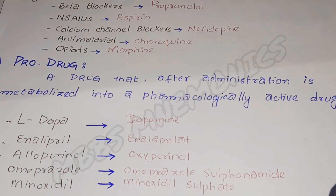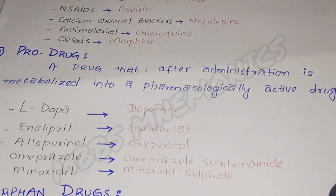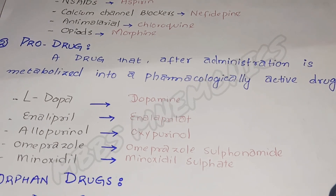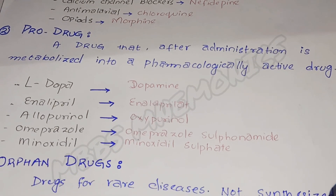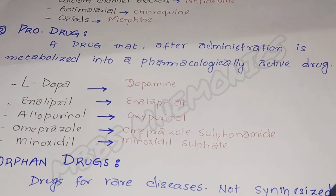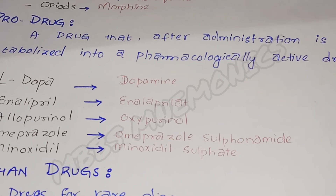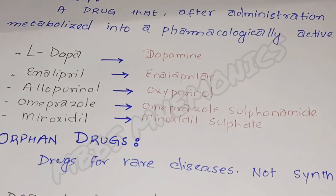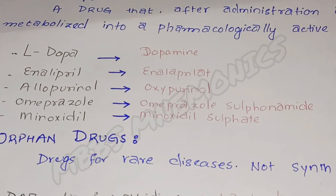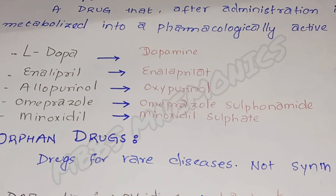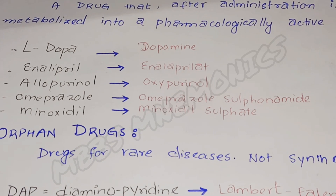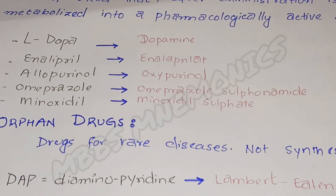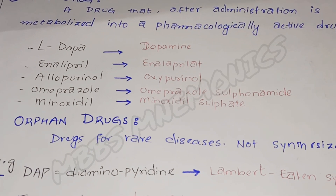Examples are levodopa, which is converted into its active form dopamine; enalapril, which is converted into enalaprilate; allopurinol, whose active form is oxypurinol; omeprazole, a PPI whose active form is omeprazole sulfoxide; and minoxidil, whose active form is minoxidil sulfate. These are drugs that are first converted into their active forms in our body and then perform their required actions.